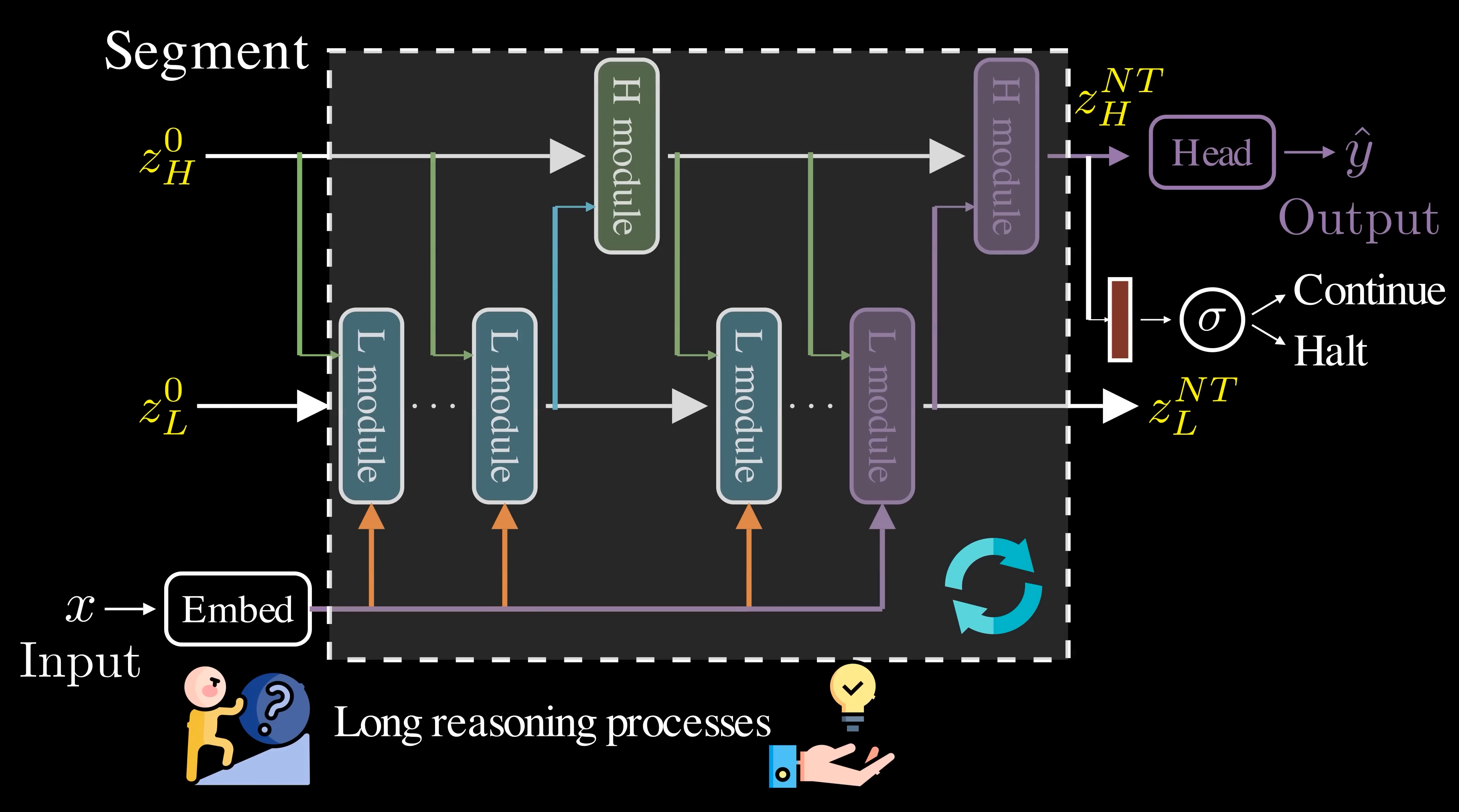Specifically, at the end of each segment, the model predicts whether to continue or stop the recurrence. We implement this by applying a linear layer followed by a sigmoid function. And that's how the HRM works.